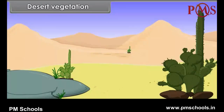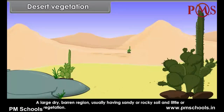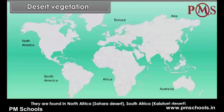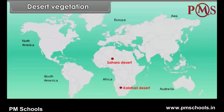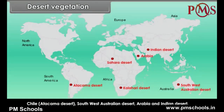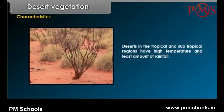Desert Vegetation. A large dry barren region usually having sandy or rocky soil and little or no vegetation. Tropical deserts have developed on the western margins of the continents. They are found in North Africa (Sahara Desert), South Africa (Kalahari Desert), Chile (Atacama Desert), Southwest Australian Desert, Arabia and the Indian Desert.